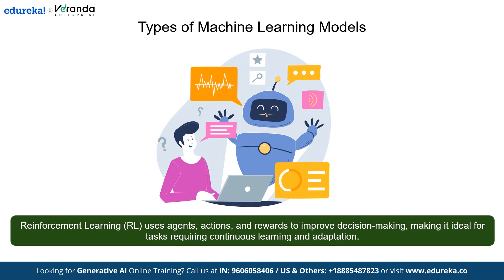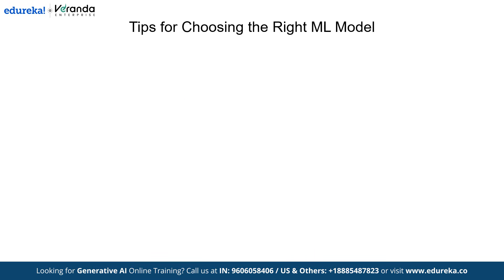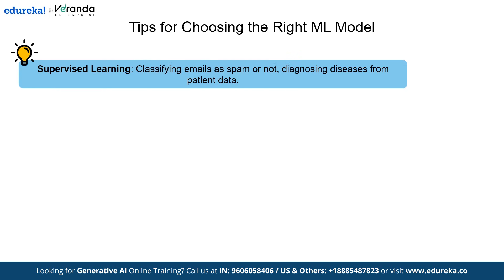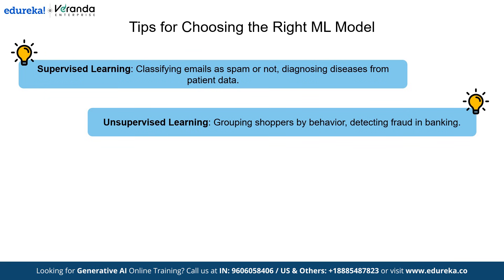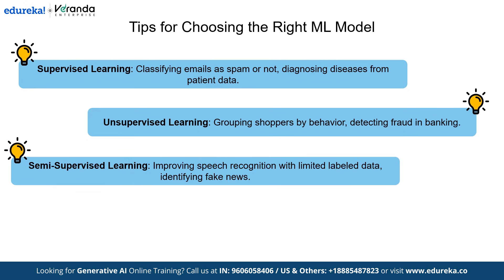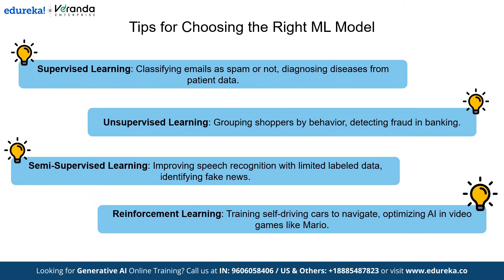Now that we've covered all types of machine learning models, let's go over some key tips to help you choose the right one. For supervised learning: classifying emails as spam or not, and diagnosing diseases from patient data. For unsupervised learning: grouping shoppers by behavior and detecting fraud in banking. For semi-supervised learning: improving speech recognition with limited labeled data and identifying fake news. For reinforcement learning: training self-driving cars to navigate, and optimizing AI in video games like Mario.